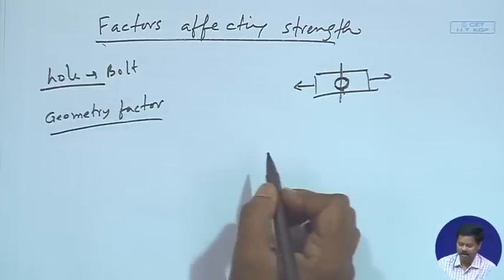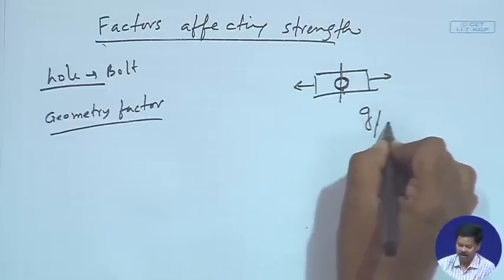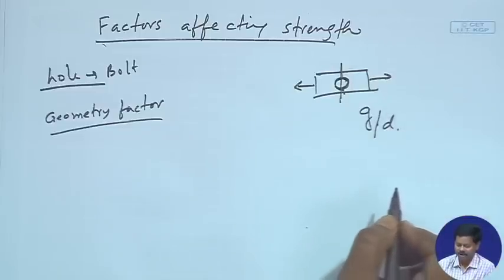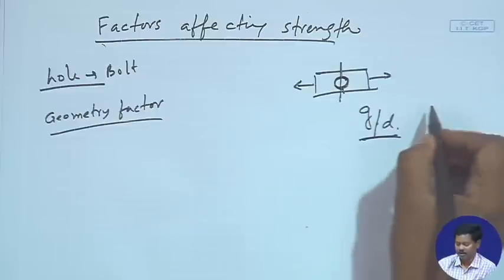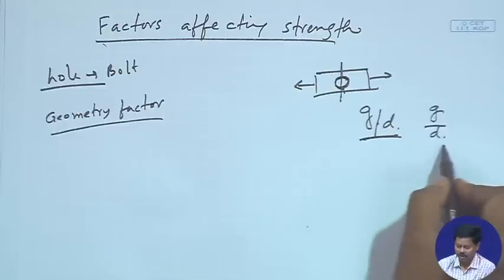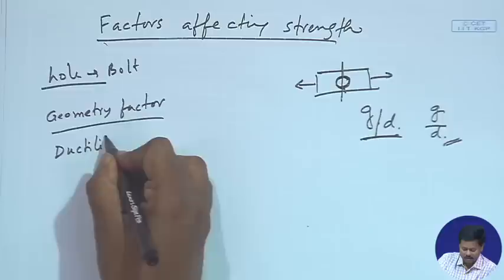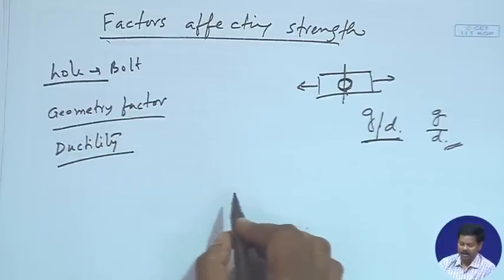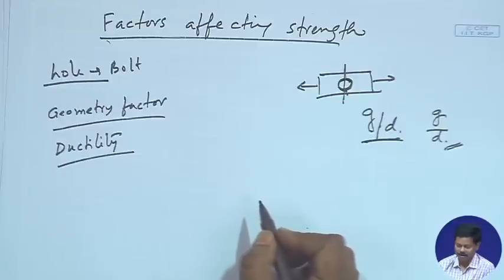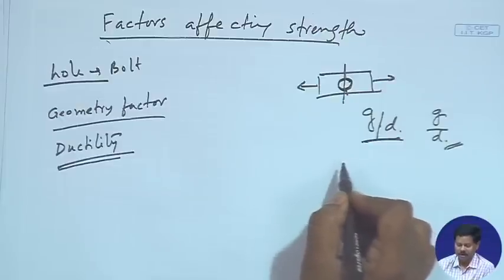Another factor is the geometry factor. A lower ratio of gauge length to diameter — gauge length G and diameter D — results in containment of contraction at the net section and hence is more efficient. That means when the G/D ratio is low, it will be more efficient. Then there is the ductility factor. If the member becomes ductile, it increases its strength because the distribution of stress becomes even, and because of that we can get more strength from the member.